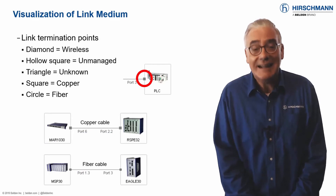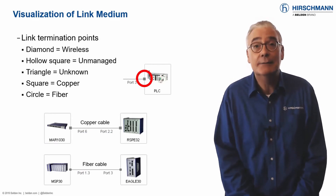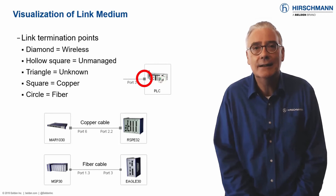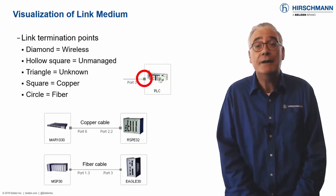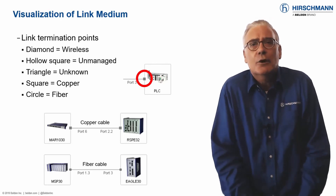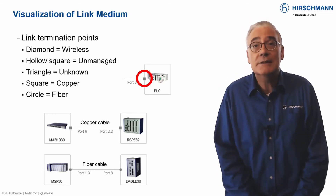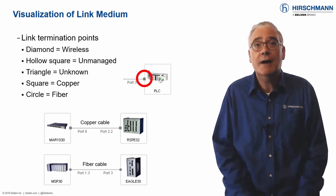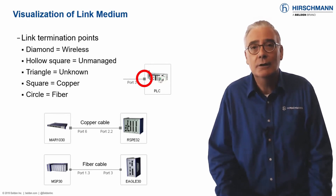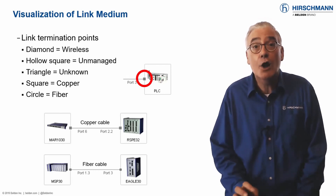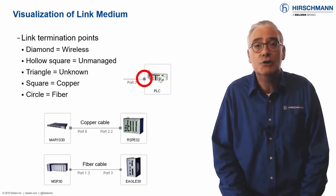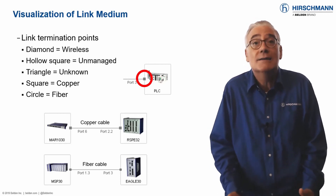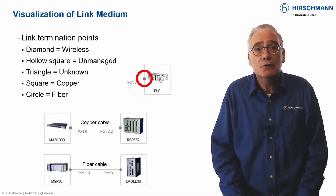Visual information is easier to digest than text-based information. A good graphic can convey a lot of information quickly and concisely. This is why we've spent a great deal of design effort on the Industrial HiVision graphical user interface. Many network management systems use a line between two devices to represent a connection, but as a network administrator you need a lot more information. It's important to know the medium used for the connection — is it copper, fiber, or wireless? This information is available to you at a glance.